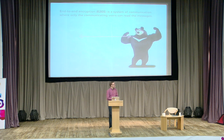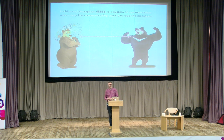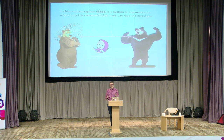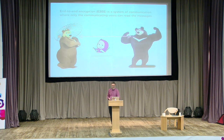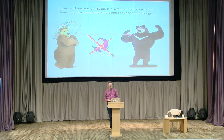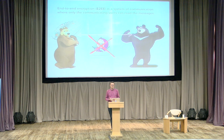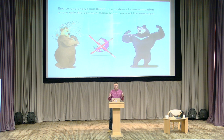So what is end-to-end? End-to-end encryption is a system of communication where only the two communicating users can read the message. In principle it prevents potential eavesdroppers — including telecom providers, internet providers, or even the provider of the communication service — from being able to access the keys needed to decrypt the conversation. To illustrate: two interlocutors have a romantic chat, and the last thing they need is a third party on the line who might read their messages. This is what end-to-end encryption helps to achieve.